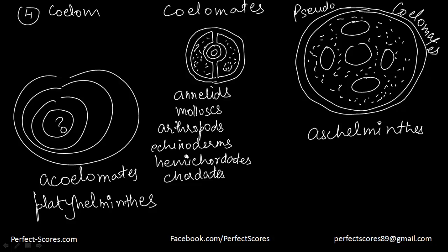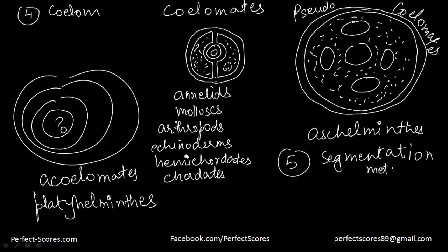The fifth factor is segmentation — how the body is segmented. In some animals, there is serial repetition of at least some organs. For example, in the earthworm there is a pattern called metamerism, where each segment has the same composition as the other segment. Another factor is the absence or presence of a notochord, which is a rod-like structure formed on the dorsal side during embryonic development. Animals with the notochord are called chordates, and animals without it are called non-chordates, for example sponges.